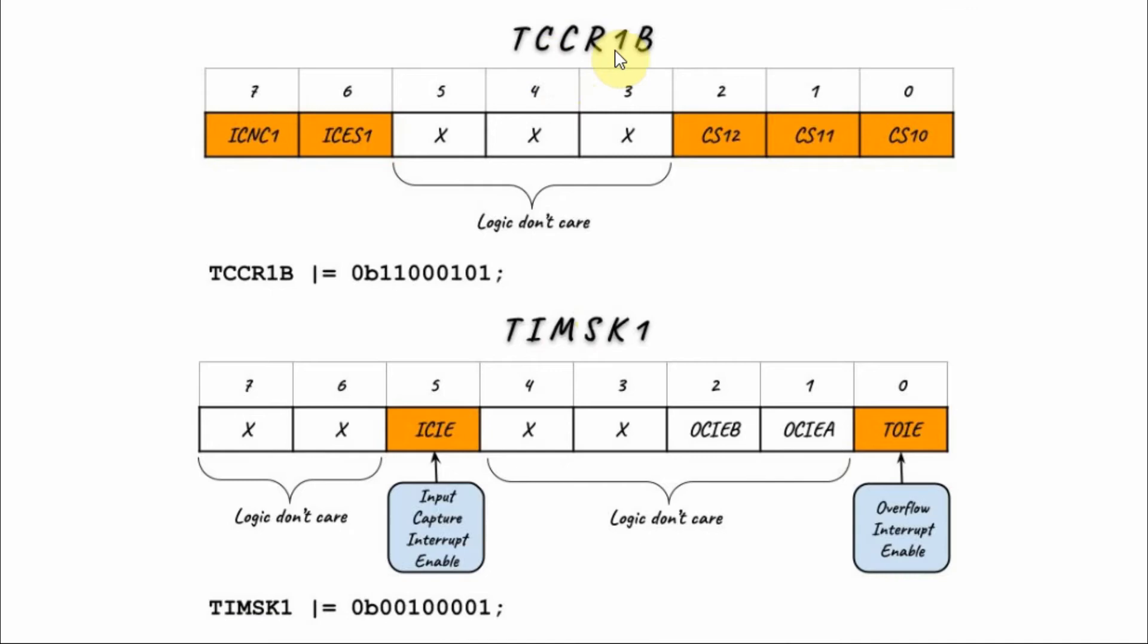We program Timer 1 control register B by choosing values for the clock select bits 1, 0, 1 to give us a prescaler of 1024.